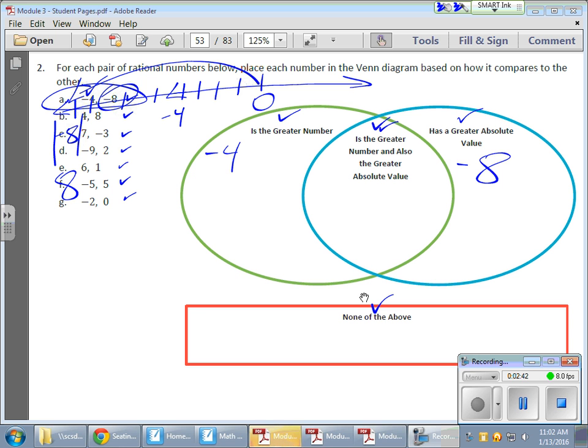Let's see if any of those guys qualify in the center area here. Is it the greater number and also the greater absolute value? Well, let's see, this is the greater number, but it's not also the greater absolute value, so it stays here. And this guy here isn't the greatest number anyway, so it doesn't belong anywhere else other than where it is. And then we have an area for none of the above, which of course, those guys already qualified for the other two, so they can't be none of the above.